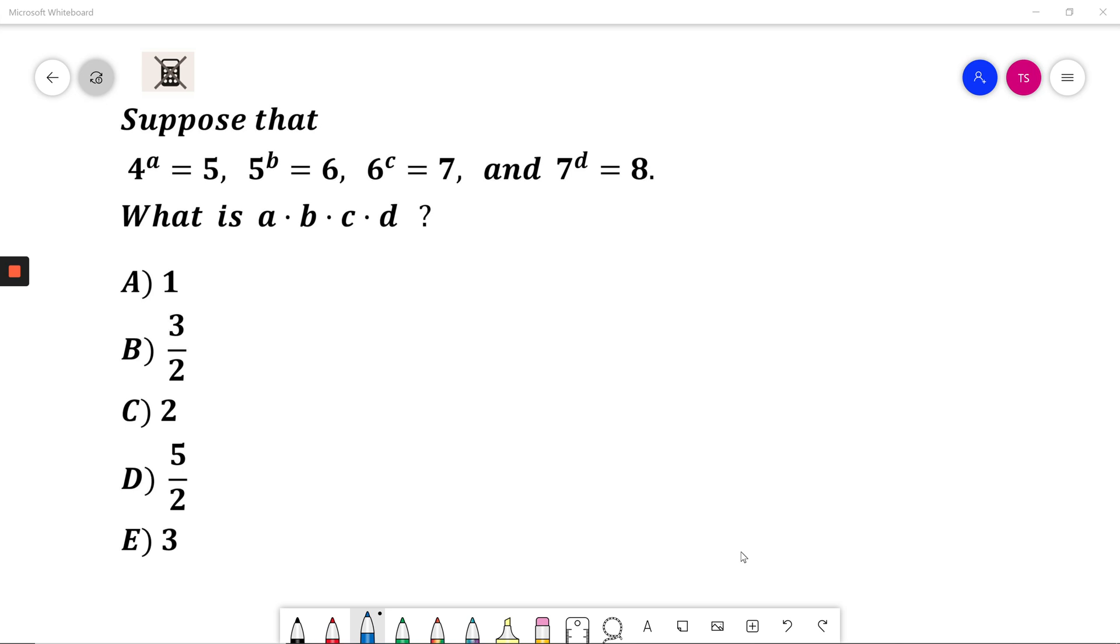Suppose that 4 to power of A is 5, 5 to power of B is 6, 6 to power of C is 7, and 7 to power of D is 8. What is A times B times C times D?